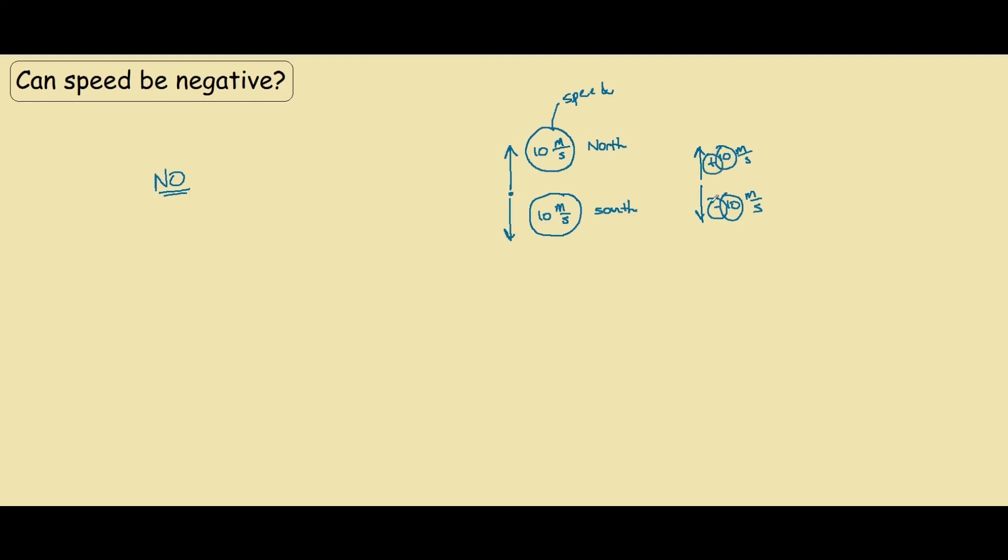Positive means north, and negative means south in this case. So to rephrase, we cannot refer to speed as being negative.